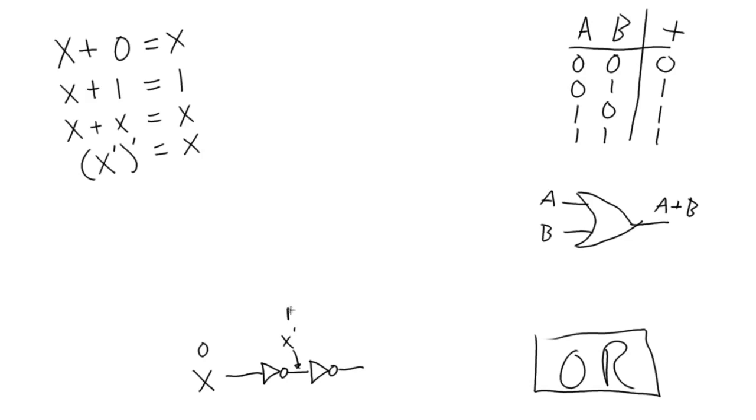so that flips to a 1, and then it flips back to a 0. So we're basically undoing the inversion here. So that's theorem 4.